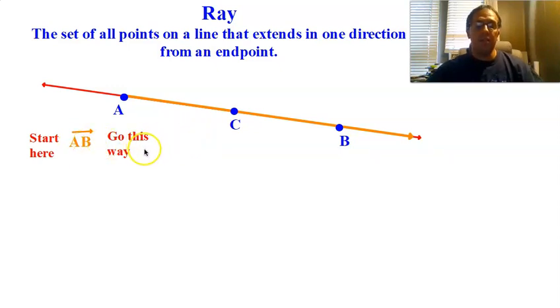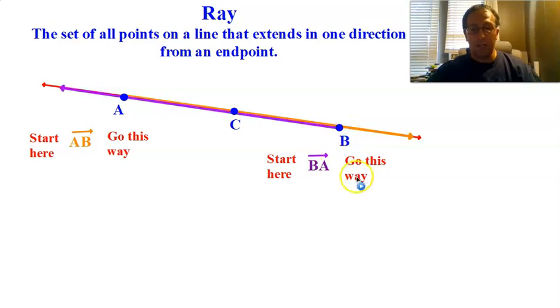All right? So is this the same as Ray BA? Well, Ray BA would say start at B and go this way, go towards A. So that would look like this. The orange and the purple, those are not the same thing, are they? No, they're not. Because they have different starting points and they go in a different direction. They started in a different place and they go in a different direction. They are not the same Ray. Lines, order doesn't matter. Segments, order doesn't matter. Ray, order matters.